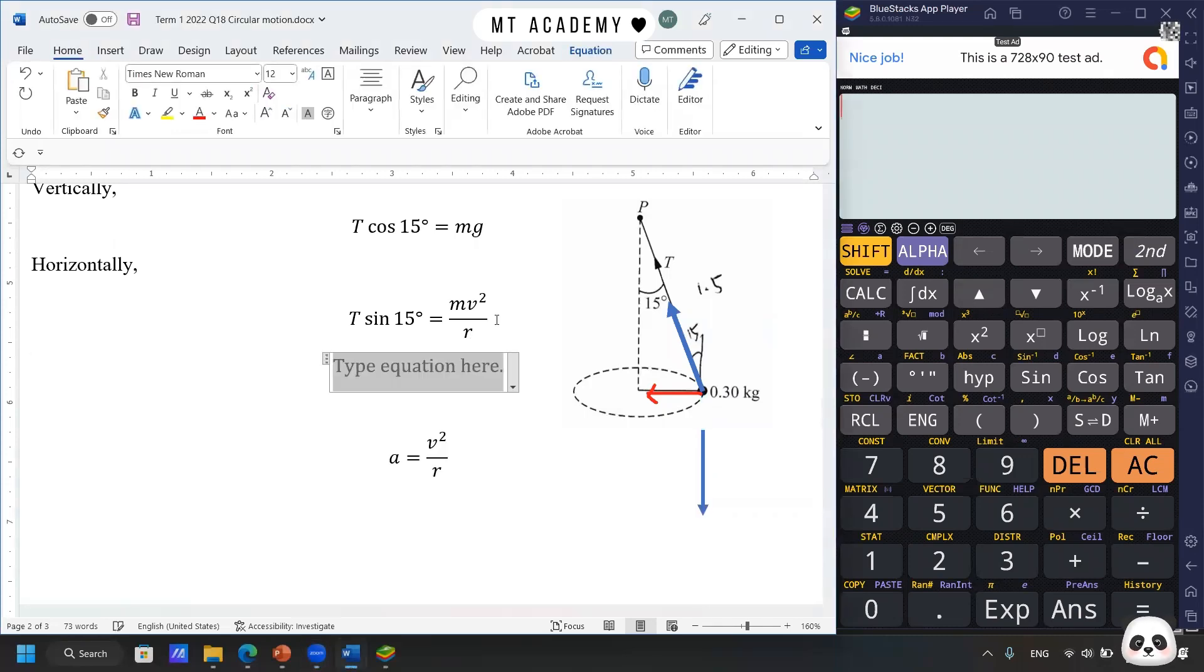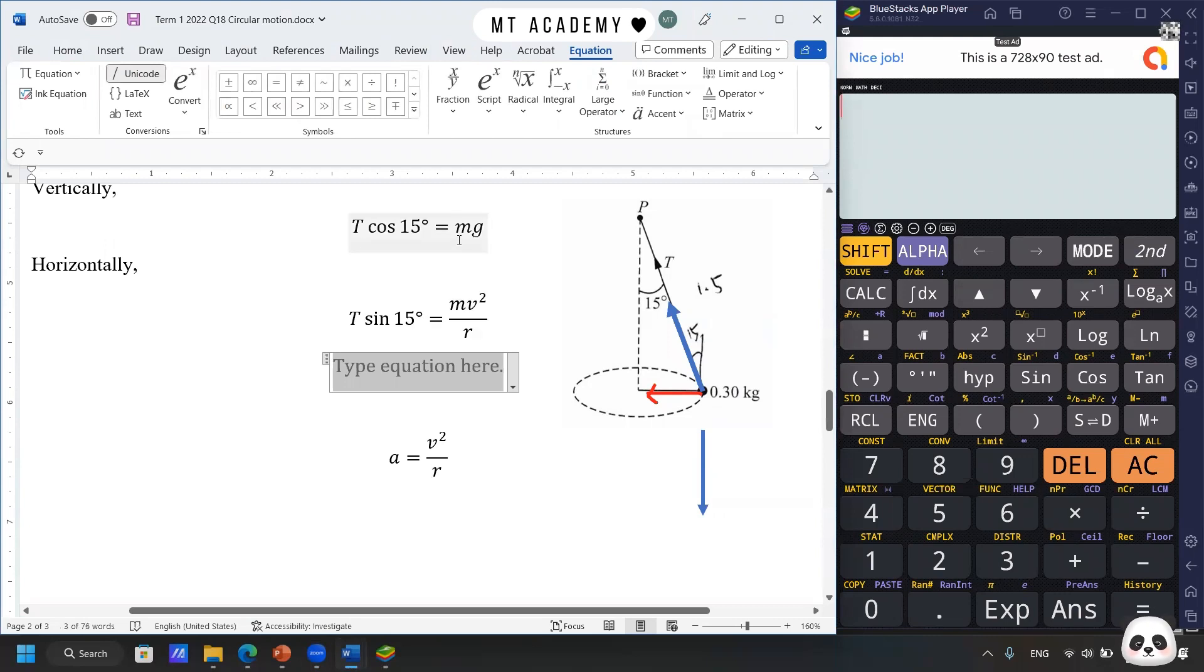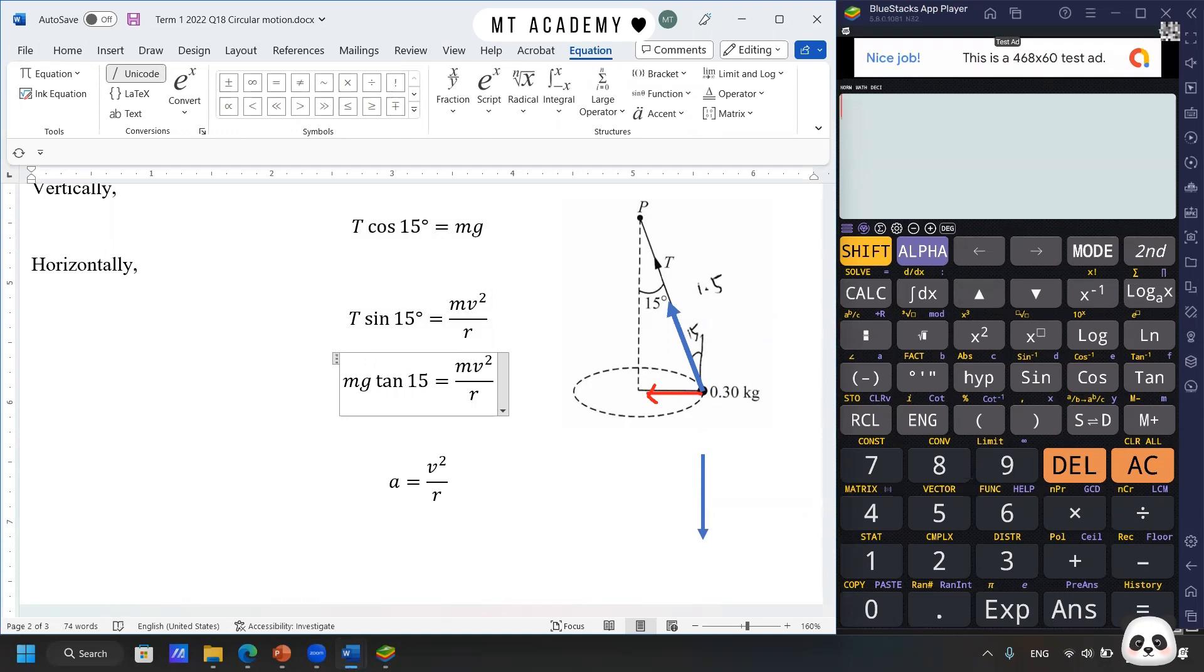So what we can do is we can perform the substitutions that the T tension is equal to mg over cos 15° and put in here, you would get mg tan 15° equal to mv² over R. So something to take note, that the radius here is the radius of the circular path, not the string, not the length of the string. One of the most common mistakes made by students. So you need to take note that the radius here could be expressed as the length of the string, 1.5 sin 15°, based on the trigonometry.